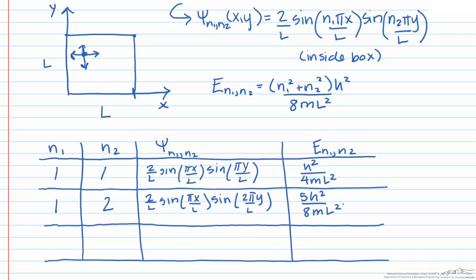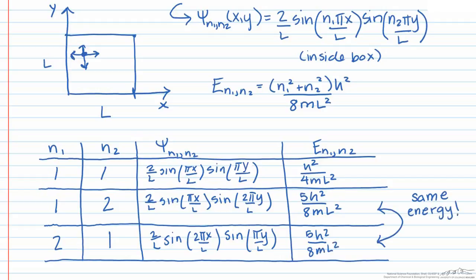Now an interesting feature arises if we take a look at the n₁ equals 2 and n₂ equals 1 state, which has the following wave function. The energy for this state ends up being 5h² over 8mL², which is the same energy as the previous state.